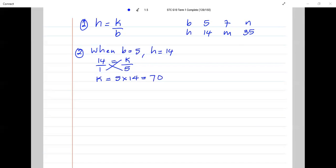Step two, you're given a value of B and H so that you can calculate K. Step three, rewrite the equation and put in the new value for K. So H is equal to K, which is 70 over B. Step four, you're either going to be given a value of B to find H or a value of H to find B.